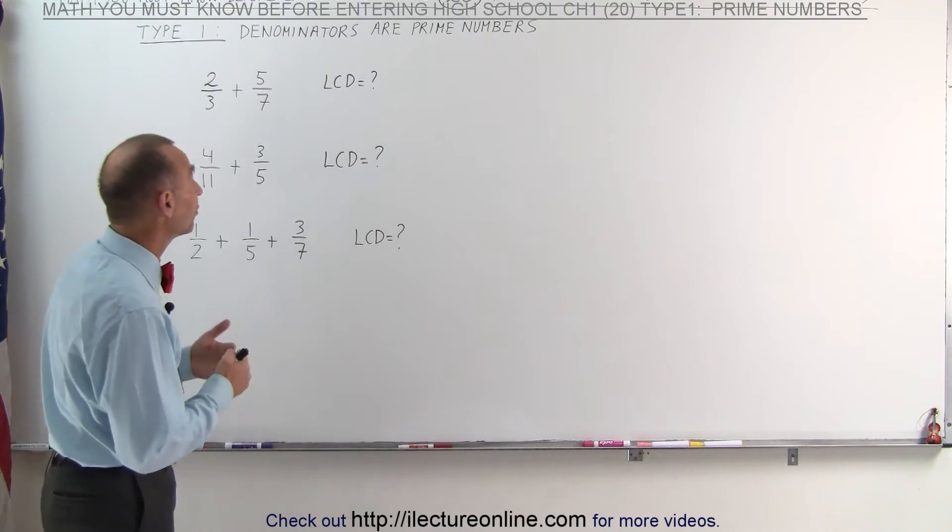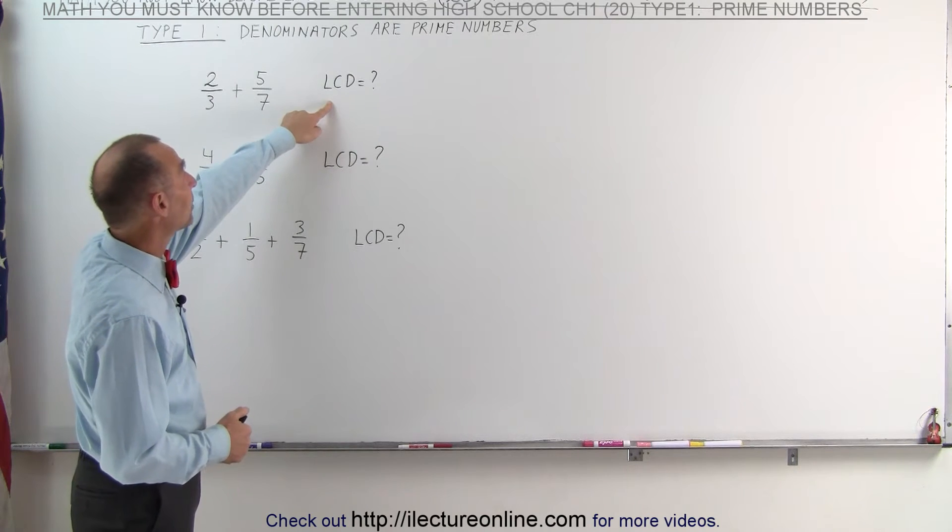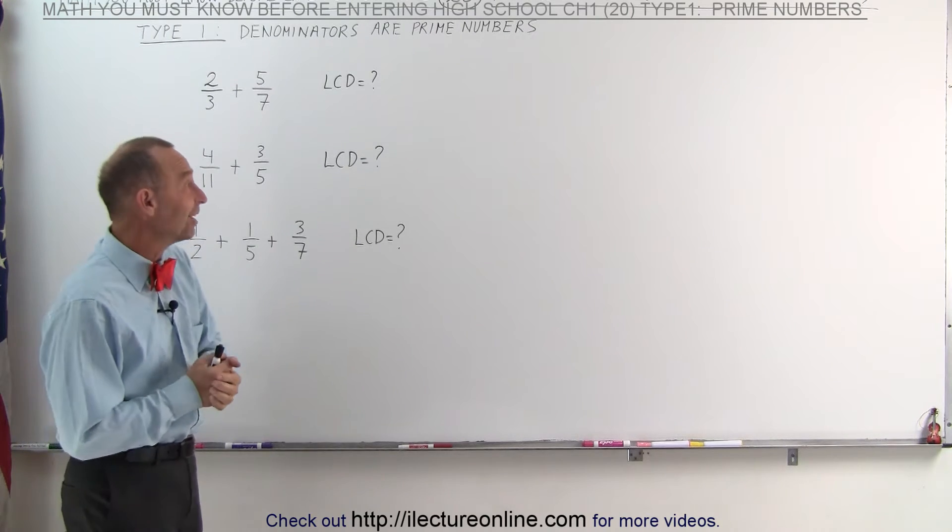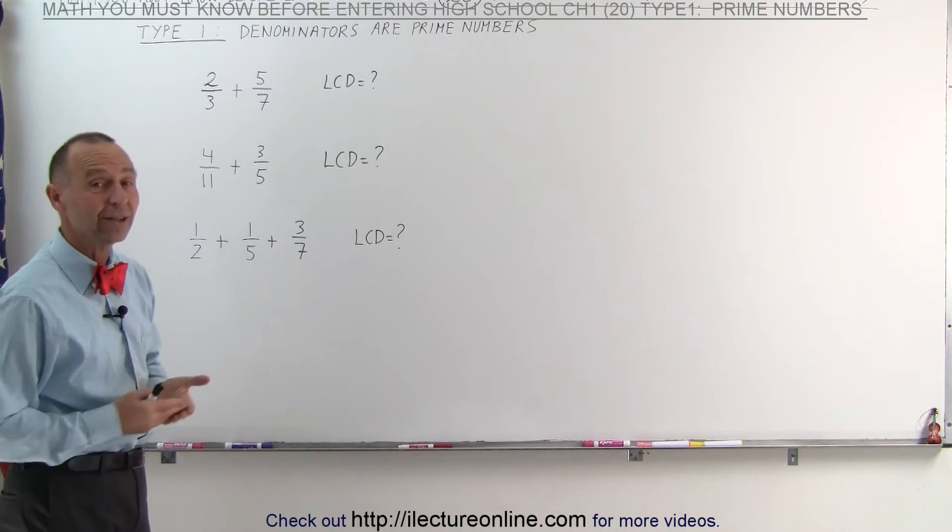So in this video, we're going to take a look and see how to find the lowest common denominator when the denominators are prime numbers. Well, the technique is rather easy. All we have to do is multiply the denominators together.